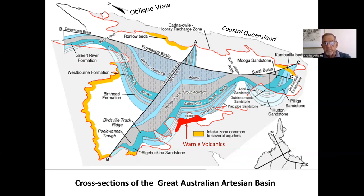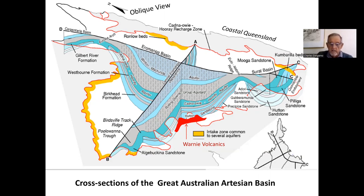It's also notable here that the Precipice Sandstone — just to the right of the red volcanic body — is relatively unimportant, pinching out just beyond the Surat Basin, and not notably developed within the main region of the Eromanga Basin. Yet it is such a prominent unit in outcrop as the exposure of the basal units of the Eromanga Basin, and is regarded as a very significant intake bed, although it doesn't extend right across the Eromanga Basin.